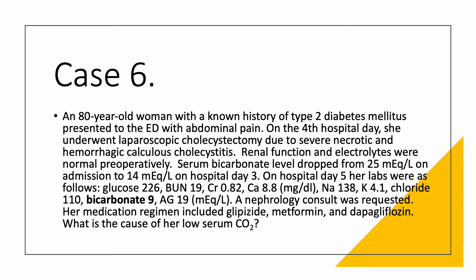Bicarbonate was really low at 19 and anion gap was 19. This is why the primary care physician was concerned — why did the bicarb drop so much from normal to that level with a high anion gap? The medications she was on included glipizide, metformin, and dapagliflozin. What is causing this low serum CO2?